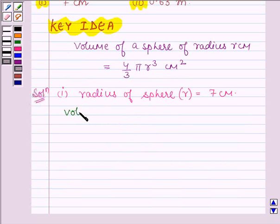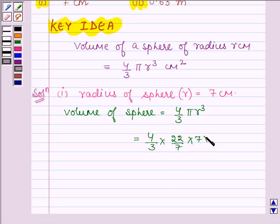And thus, volume of a sphere is equal to 4 upon 3 into pi r cube. On substituting the values of pi and r, we have 4 upon 3 into 22 upon 7 into 7 into 7 into 7 cm cube. This is equal to 1437 and 1 upon 3 cm cube.